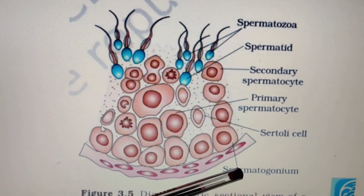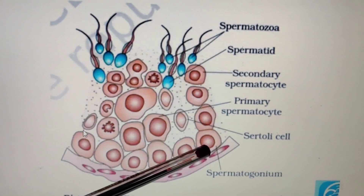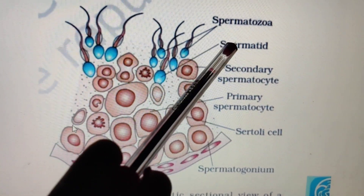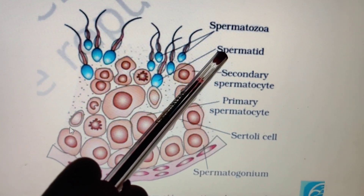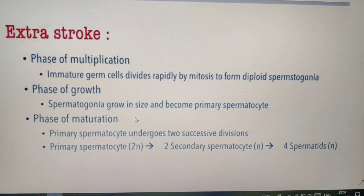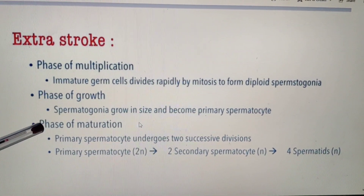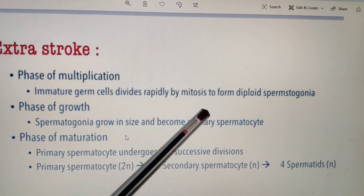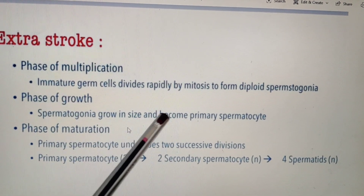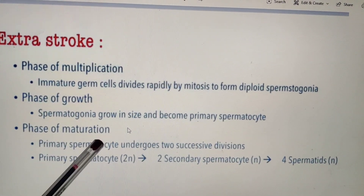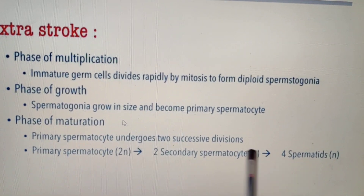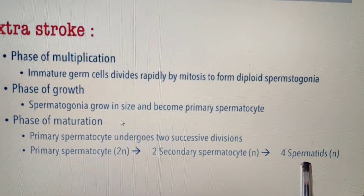So the sequence is: germ cells produce spermatogonium → primary spermatocyte → spermatid → sperms. The phases of sperm formation are divided into the phase of multiplication (mitotic division), the phase of growth (when spermatogonia grow in size and become primary spermatocytes), and the phase of maturation (primary spermatocyte results in secondary spermatocyte, and secondary spermatocyte results in spermatid).